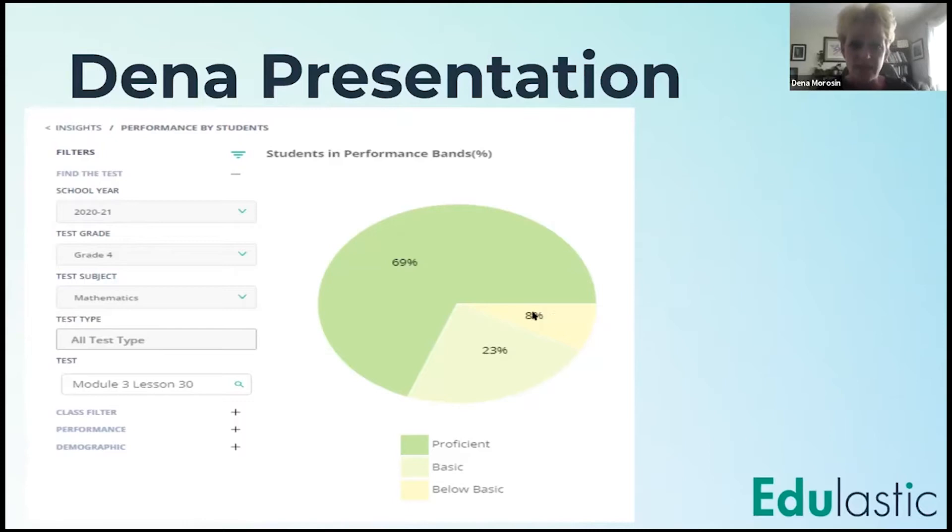So if I clicked on that 8% that shows 8% of my students are below basic, right underneath of it, it would actually pull up those students, it would name those students. So and again, this is on one assessment, on one standard. So I would be able to say, okay, these four students are below basic, and we need to have an intervention for them.